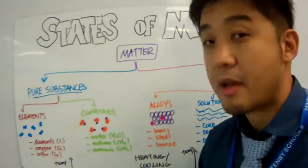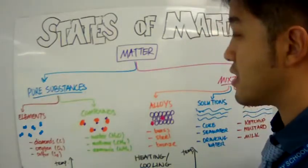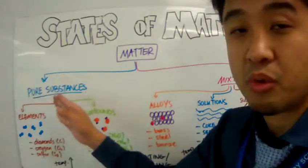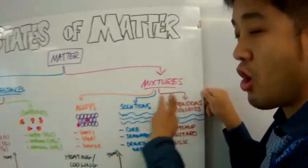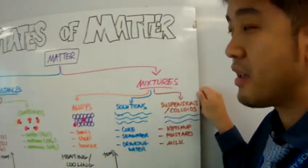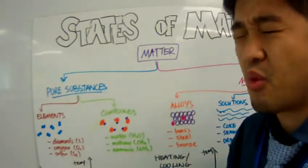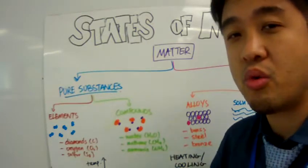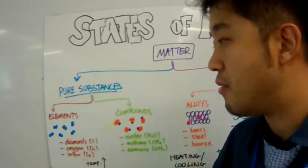Matter can be broken down into two main categories: pure substances or mixtures. Pure substances can be broken down into two smaller categories, which are elements and compounds.